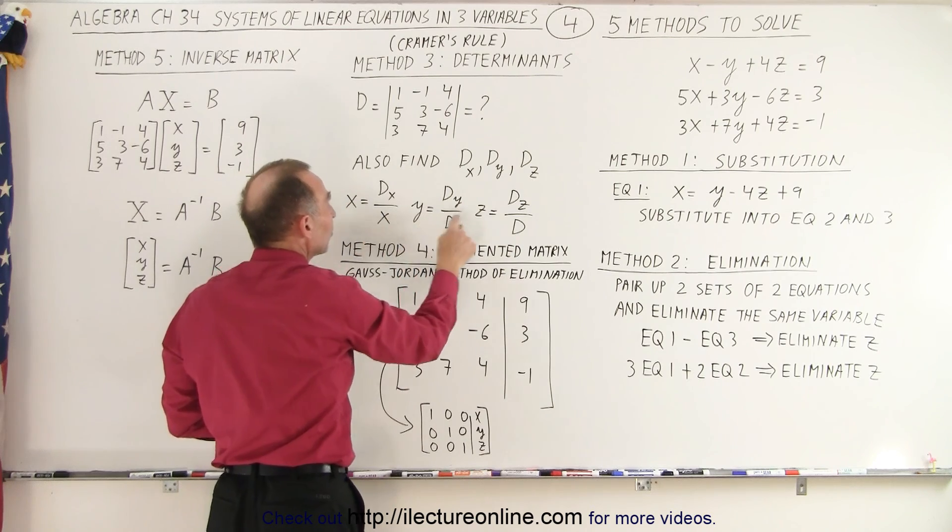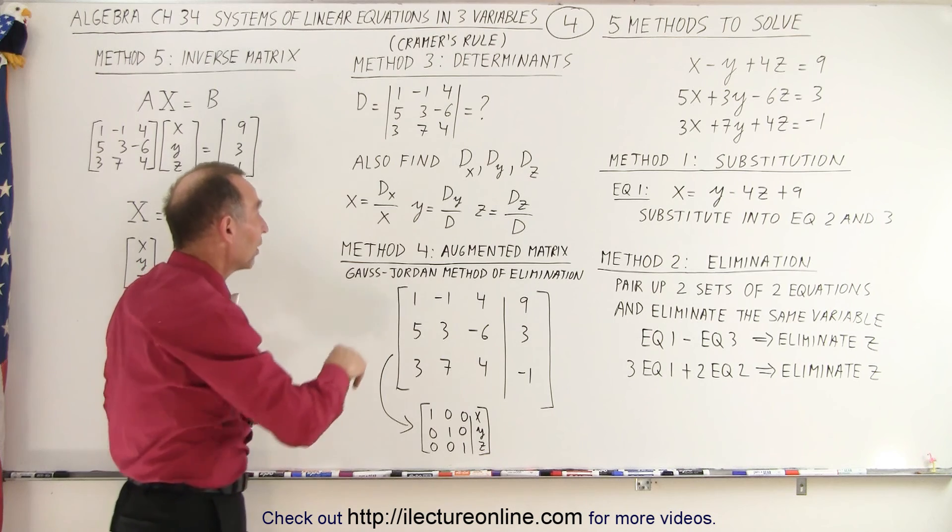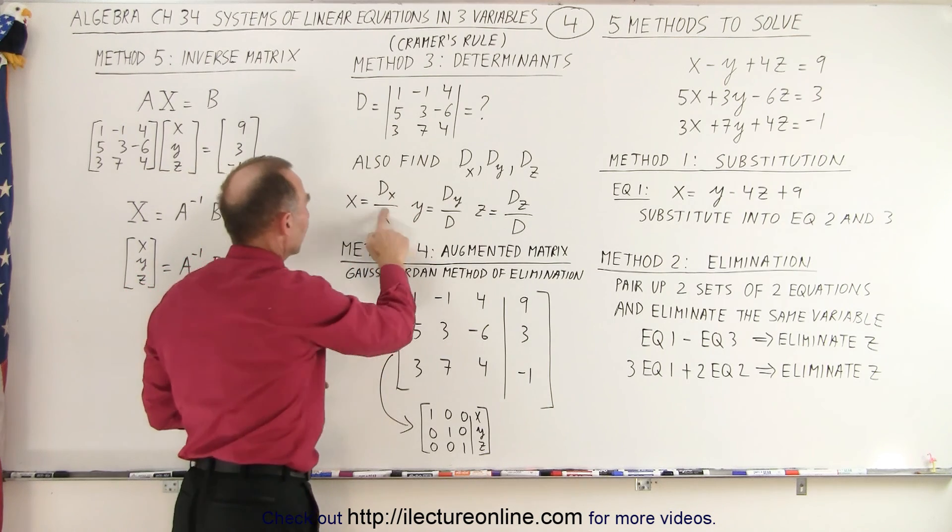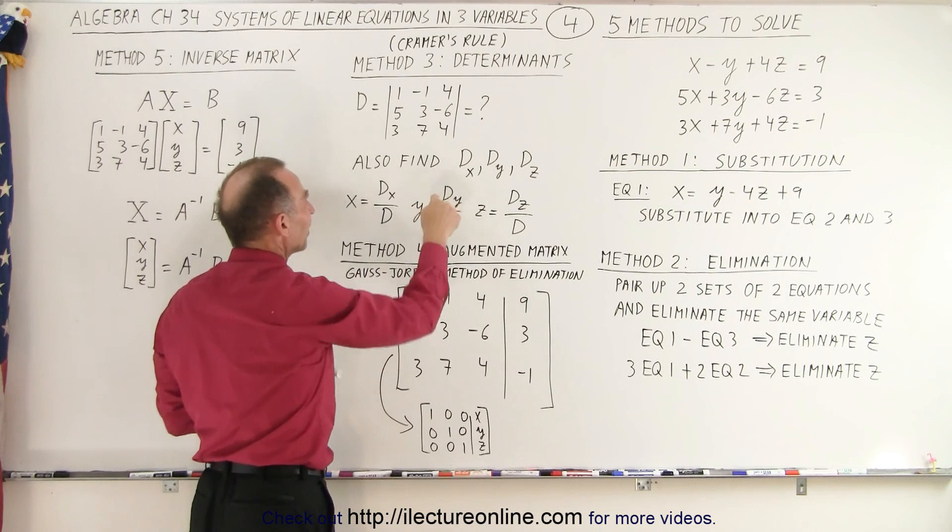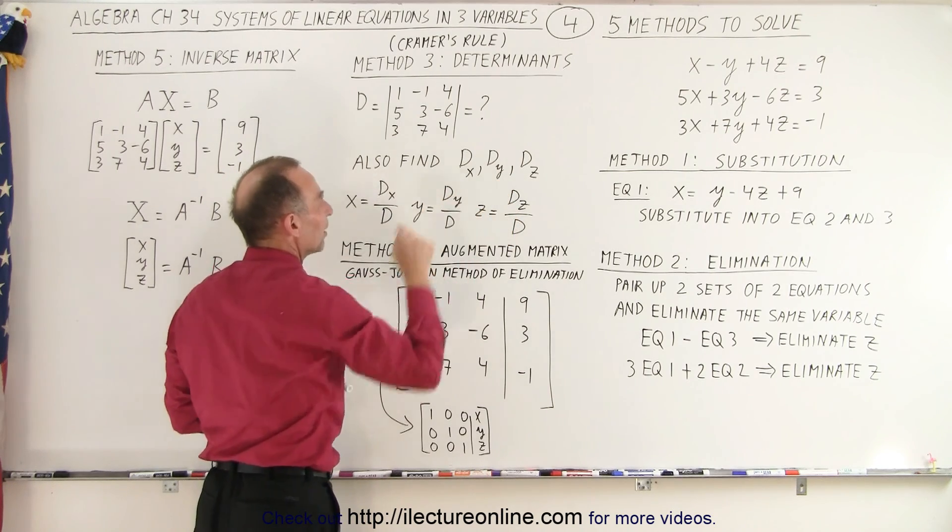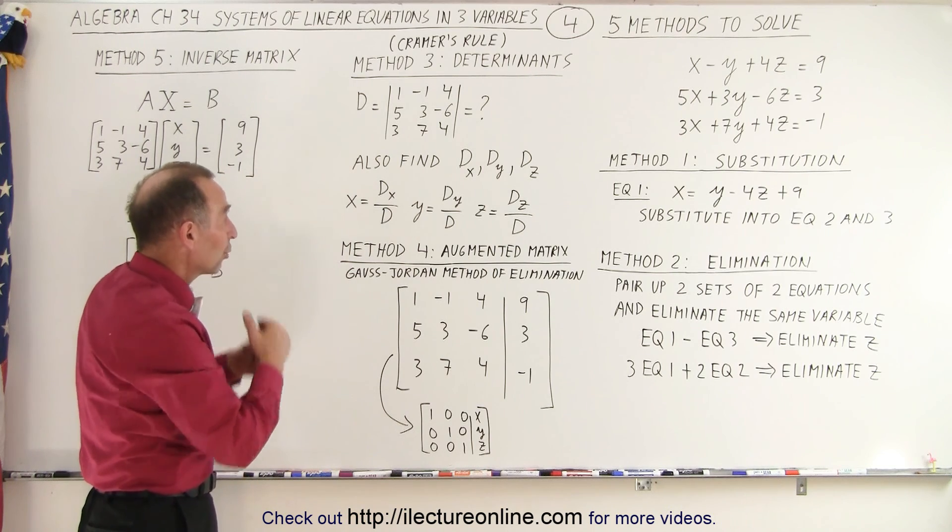And then to find the x, y, and z coordinate for the point where the three planes cross, we can simply take d sub x divided by d, d sub y divided by d, and d sub z divided by d. And by doing so, we'll find the point where the three planes cross.